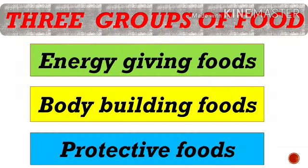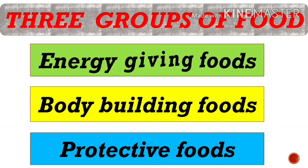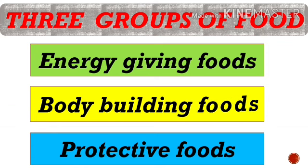Food helps us in different ways. Some food gives us energy, some gives us strength, and some protects our bodies from disease. Foods are mainly divided into three groups: energy-giving food, body-building foods, and protective foods. Let us have a look at these groups one by one.